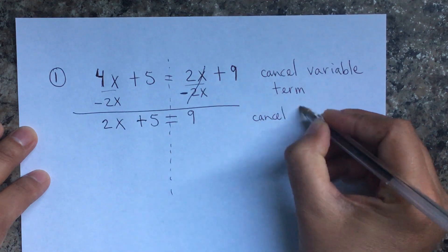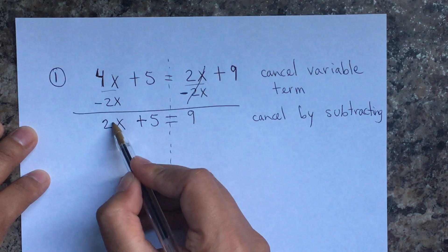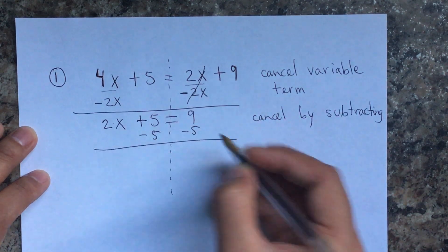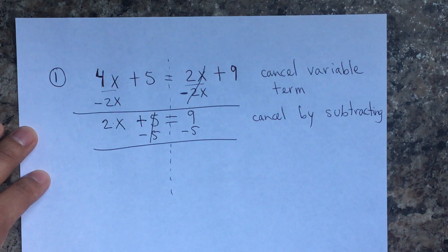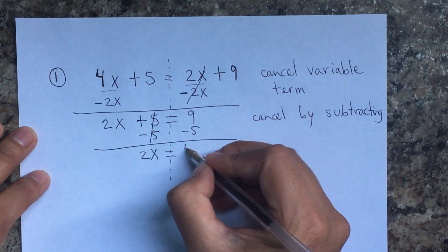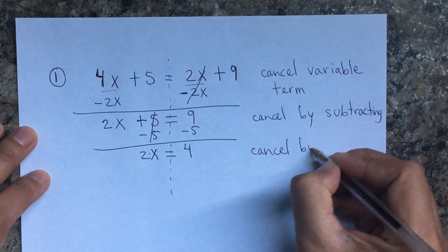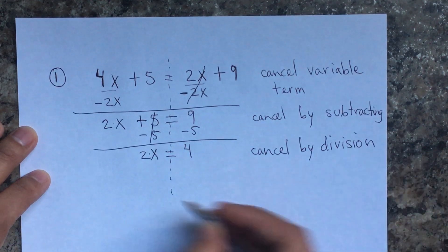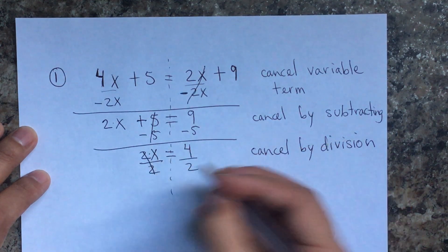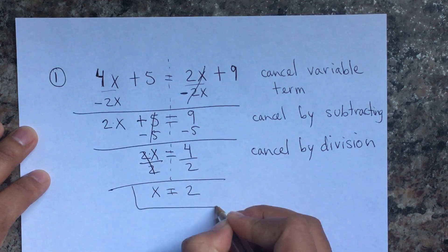Cancel by subtracting — you have to cancel the constant too. To cancel the 5, we use the inverse operation, so 5 minus 5 is 0, and 2x equals 9 minus 5, which is 4. Finally, when you have a number and a variable, that means multiplication, so the opposite is to cancel by division. We divide by 2: 2 divided by 2 is 1, so x equals 4 divided by 2, which is 2.